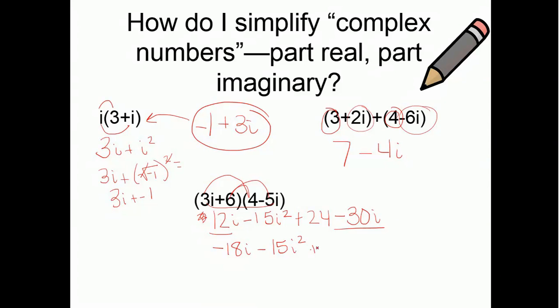Negative 15i squared plus 24. Well, i squared, that's the same as negative 1. So, technically, I have negative 15 times negative 1 right here. So, basically, I'm going to get a positive 15.